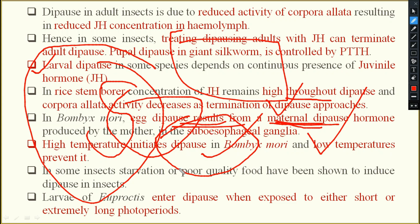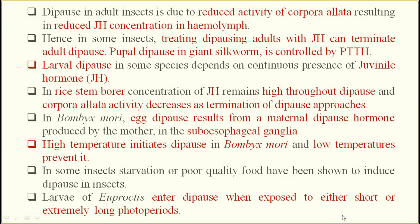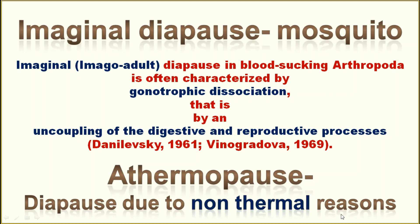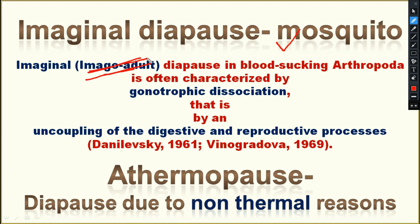In some insects, starvation or poor quality food has been shown to induce diapause. Larvae of reproductives enter diapause when exposed to either short or extremely long photoperiods — diapause can be triggered based on day length. Imaginal diapause occurs in mosquitoes — 'imaginal' meaning adult stage.